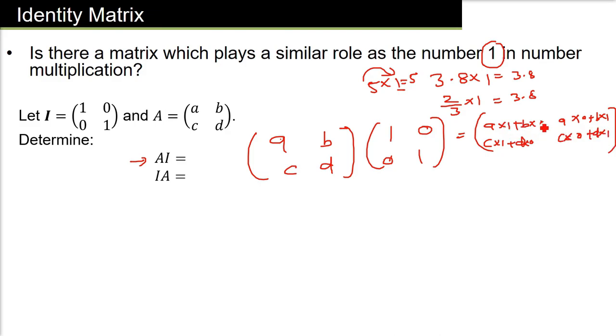So all the zeros please eliminate. This 0, this 0 will go, this also goes, this also goes. A into 1 is A, B into 1 is B, C into 1 is C, and D into 1 is D.